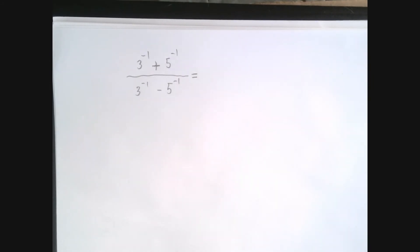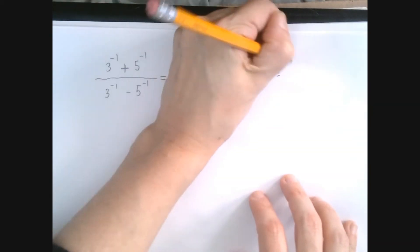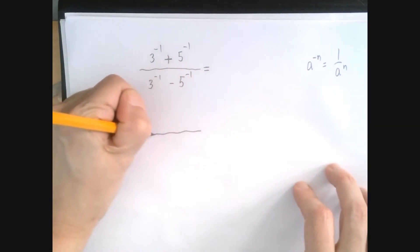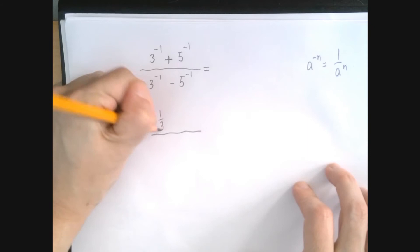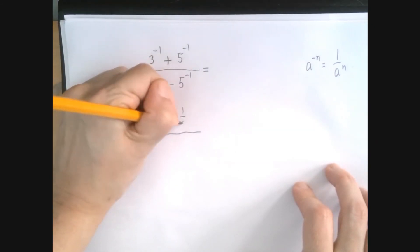So the first thing we're going to do is get rid of the negative exponent notation. As we know now, a to the negative n is the same as 1 over a to the n. And so 3 to the negative 1 is 1 over 3 to the 1. That's just 1 over 3. And 5 to the negative 1 is 1 over 5.